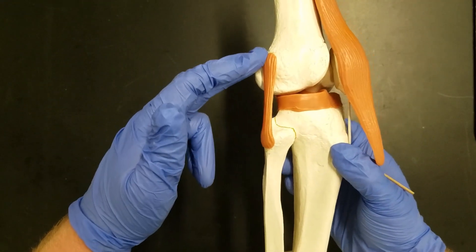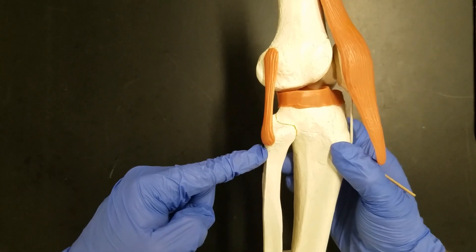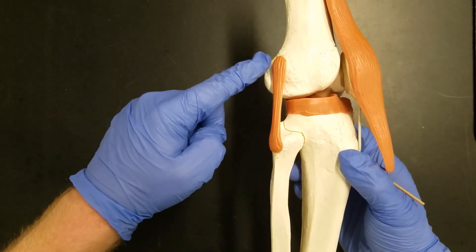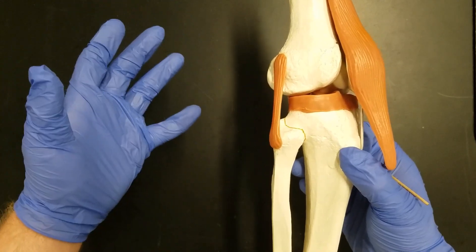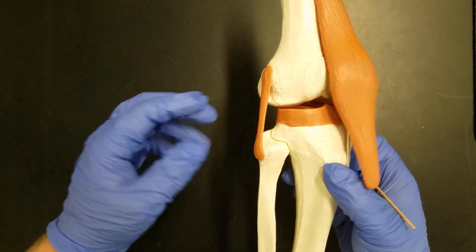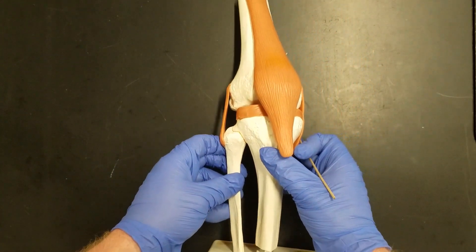On the lateral side attaching to the fibula we have the fibular collateral ligament. Older sources refer to this as the lateral collateral ligament. If you like lateral collateral you can use that. I like fibular collateral ligament because it tells you which bone it's actually attached to.